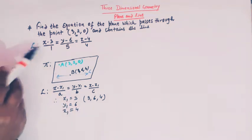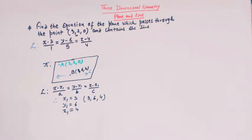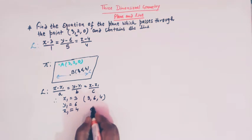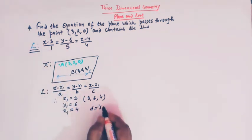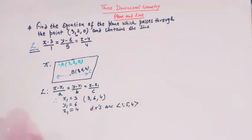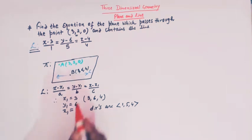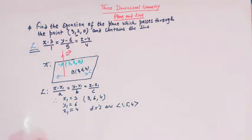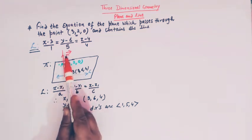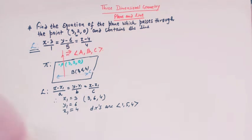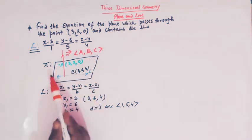This is the first conclusion drawn from the equation of the line. The second conclusion is that comparing both equations, the direction ratios of line l are given by a, b, c — and here we have 1, 5, and 4. Now we consider the normal to the plane pi, and let the direction ratios of this normal be capital A, B, and C.